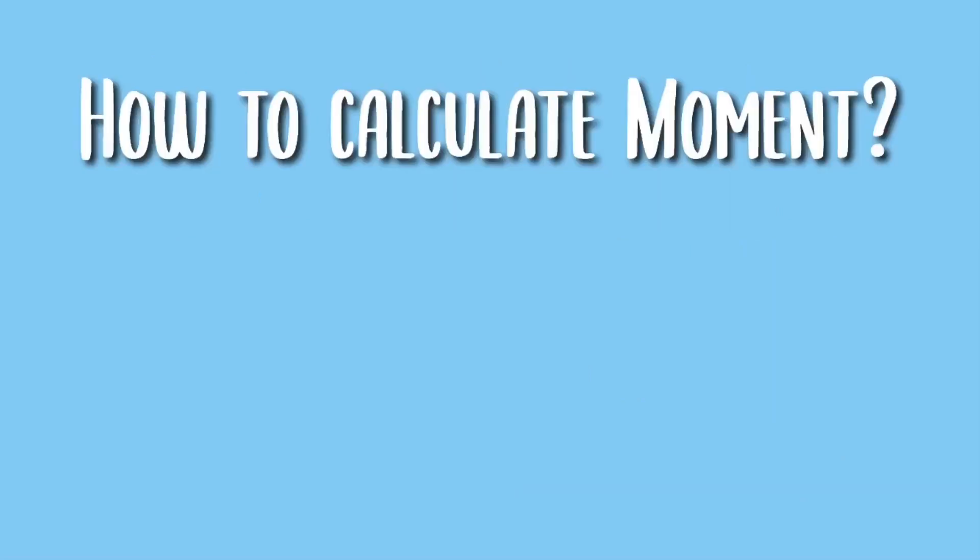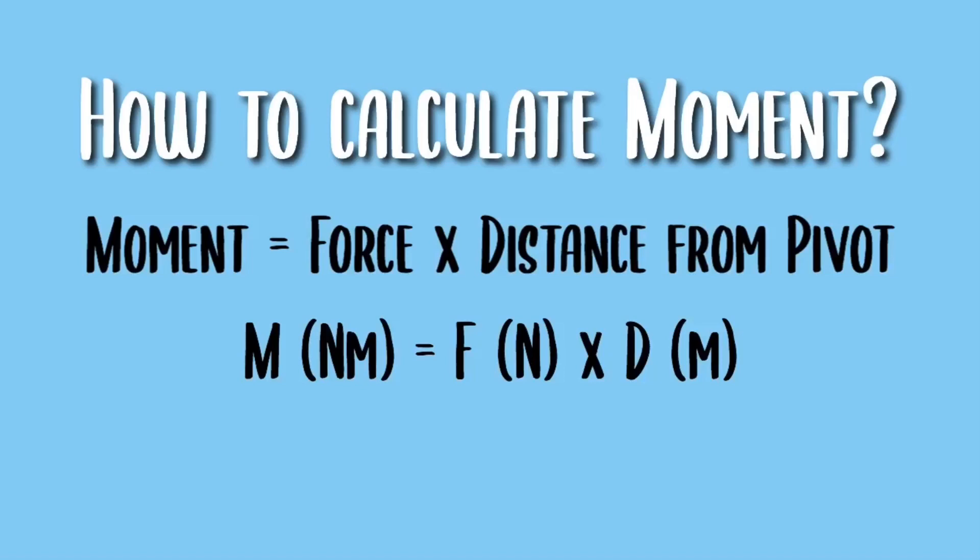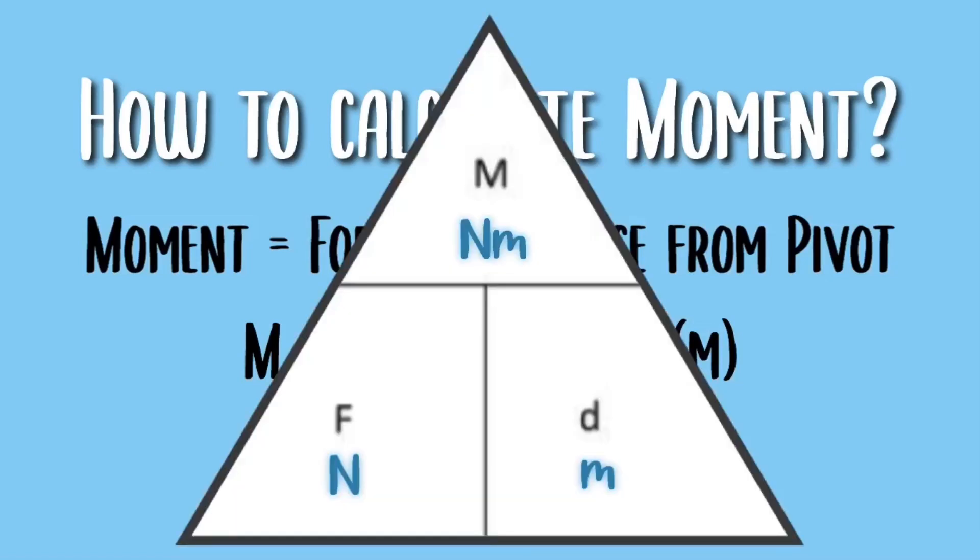So how do you calculate moments? To calculate moments, you have to multiply the force and the distance from the pivot. And this is the formula triangle for calculating moments.